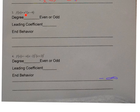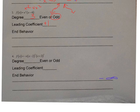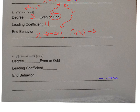Problem 3: f(x) = x²(x - 4). When distributed, I get x³ - 4x². My degree is 3, which is odd — so either up right/down left, or up left/down right. My leading coefficient is positive 1, so think positive slope. As x goes to negative infinity, f(x) goes to negative infinity. As x goes to positive infinity, f(x) goes to positive infinity.